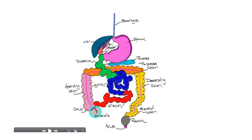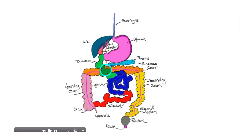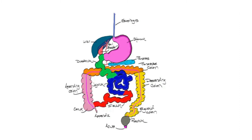The large intestine includes the appendix, cecum, ascending colon, transverse colon, descending colon, and sigmoid colon. The ascending colon is so named because chyme moves superiorly through it. Chyme moves through the duodenum, jejunum, and ileum, then up the ascending colon. It then moves across the body from right to left at the right colic flexure, becomes the transverse colon, then moves inferiorly as the descending colon. The descending colon terminates in an S-like pattern called the sigmoid colon, which gives rise to the rectum and the anus.